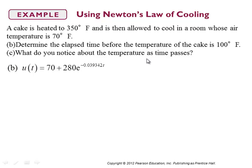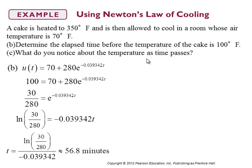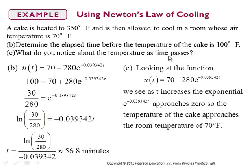Part B: determine the elapsed time before the temperature of the cake is 100°F. Set U = 100 and solve for T as shown. Part C: what do you notice about the temperature as time passes? As time gets larger and larger, the exponential function becomes smaller and smaller, so the overall function also decreases. As T becomes very large — several hours passing — the 280e^(kT) term approaches zero, meaning the temperature of the cake will get closer and closer to the room temperature of 70°F.